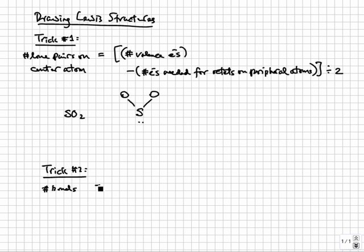Here's the second trick. Take the total number of valence electrons which for this molecule is 18. Subtract from this the electrons needed to satisfy the octets on all atoms in the molecule. There are three atoms in SO2. Three octets require a total of 24 electrons. Divide the result by two and this should be the number of bonds in the final Lewis structure of the molecule. So there should be three bonds in the Lewis structure of SO2.